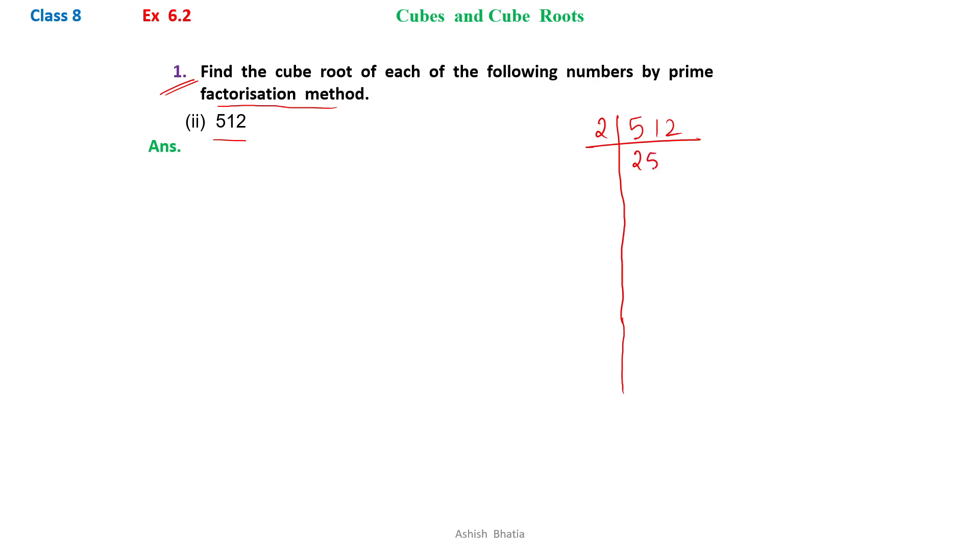2 times 2 is 4, 2 times 5 is 10, 2 times 6 is 12, 2 times 1 is 2, 2 times 2 is 4, 2 times 8 is 12.